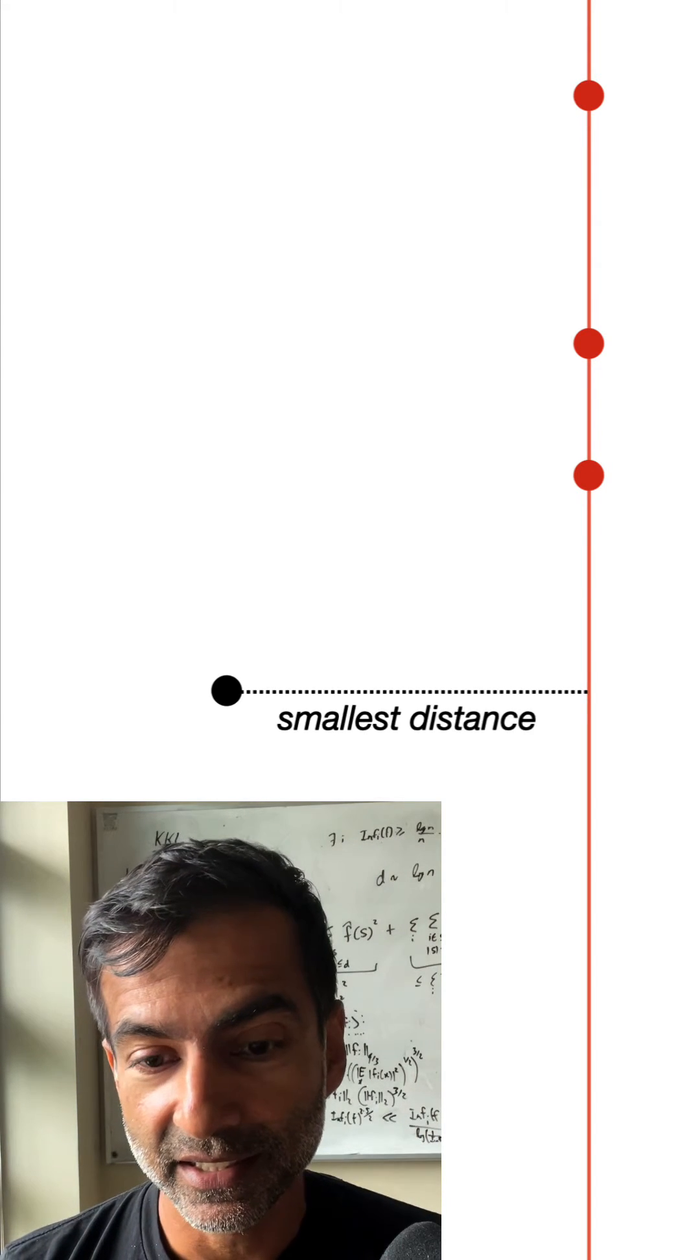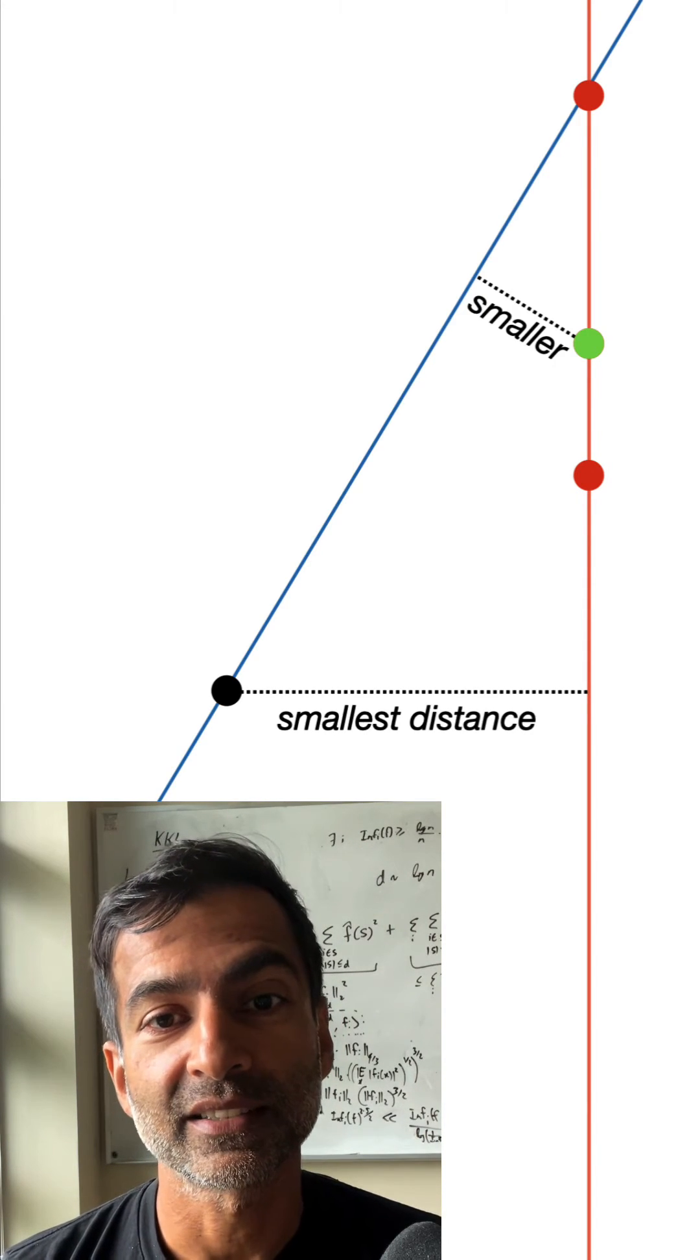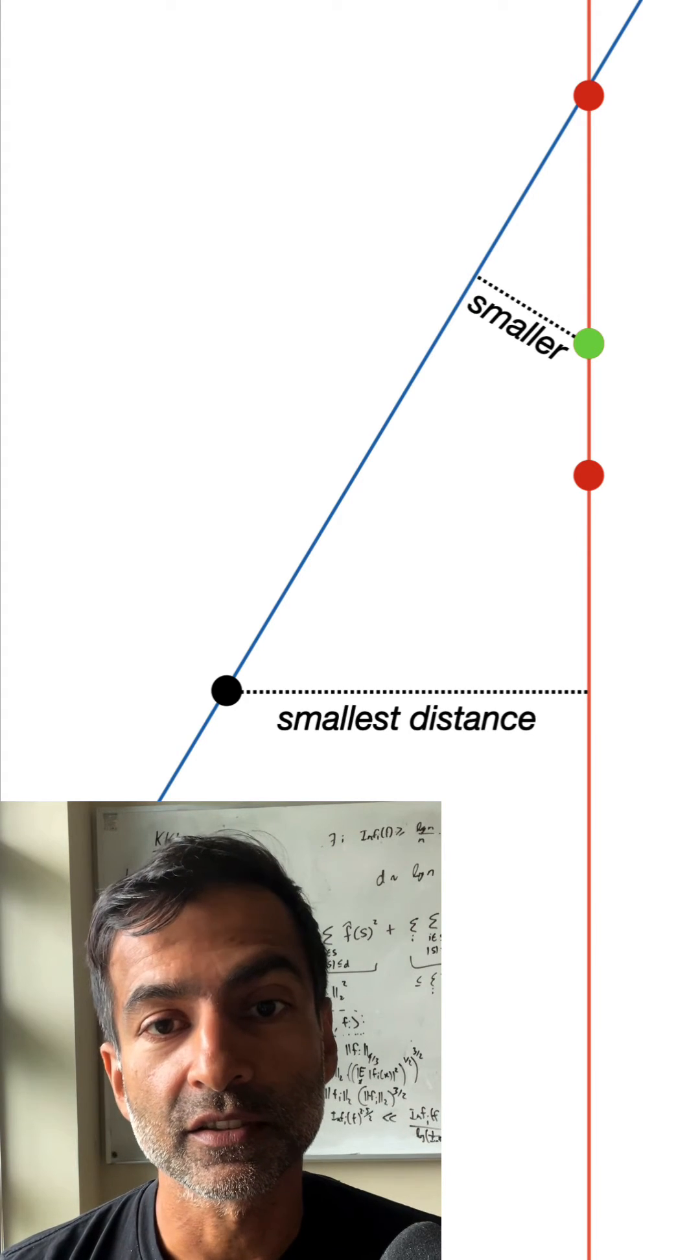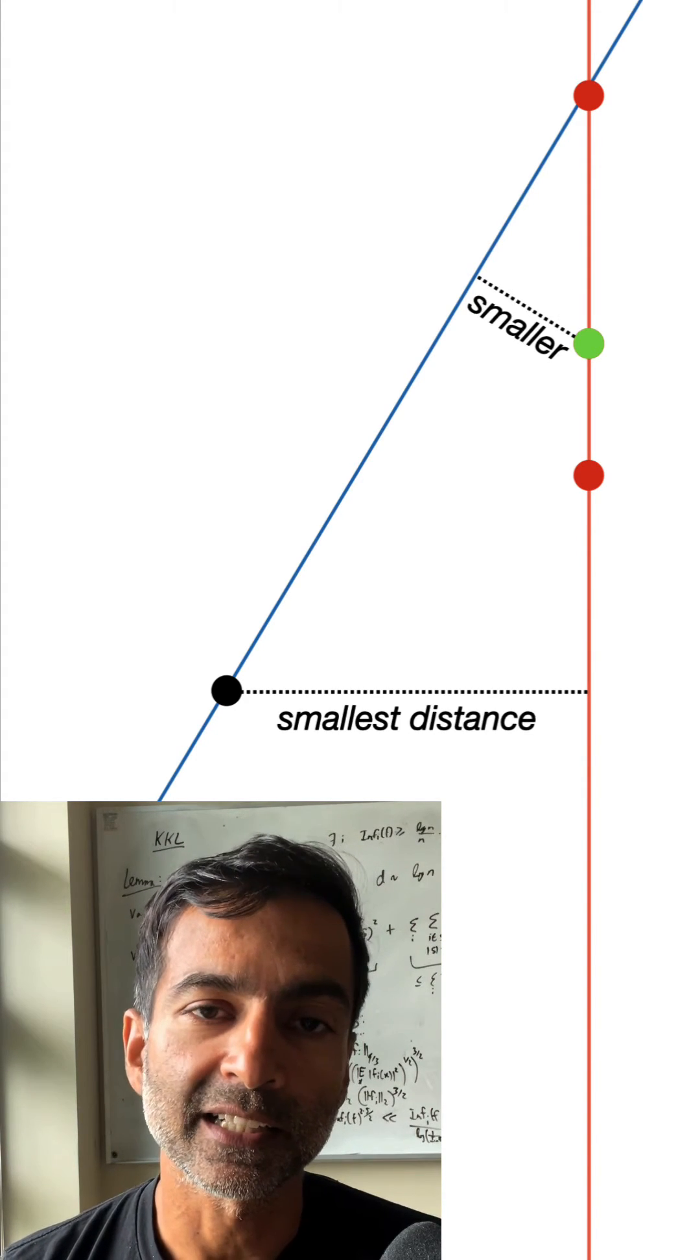But then you see that this green point is closer to this blue line than the black point is to the red line.